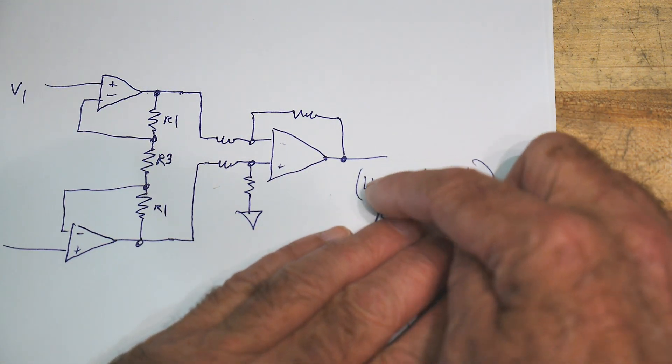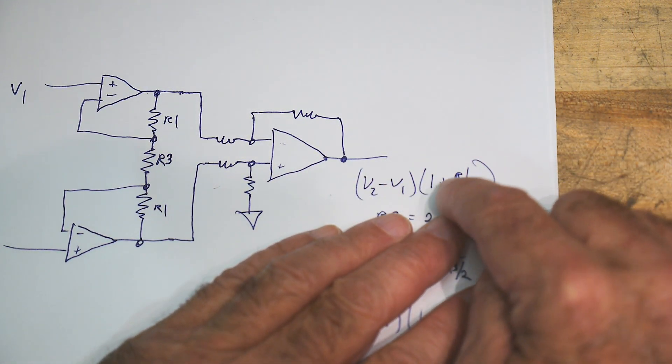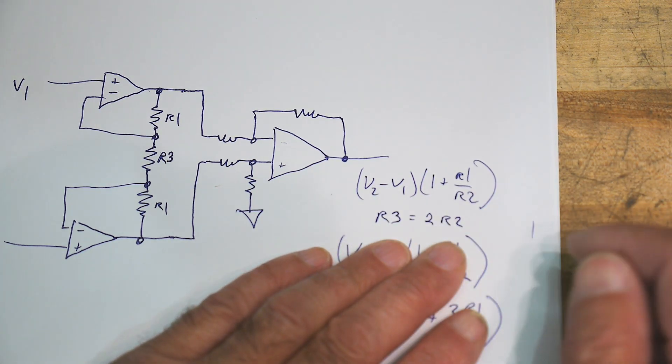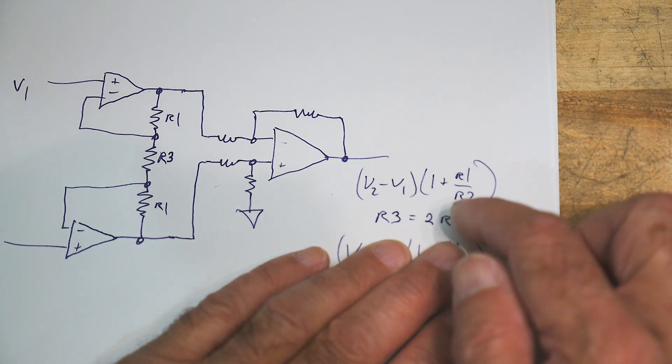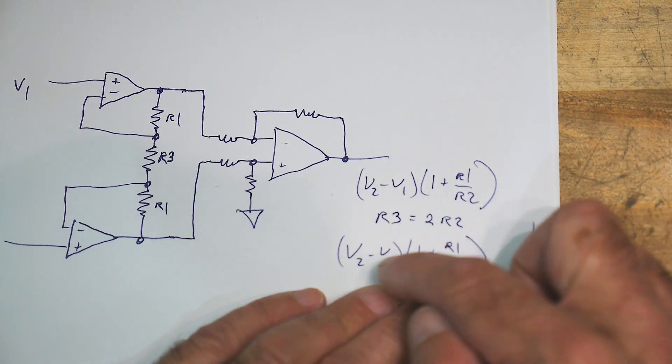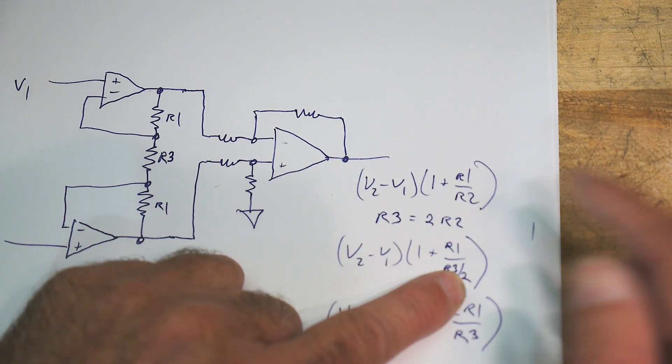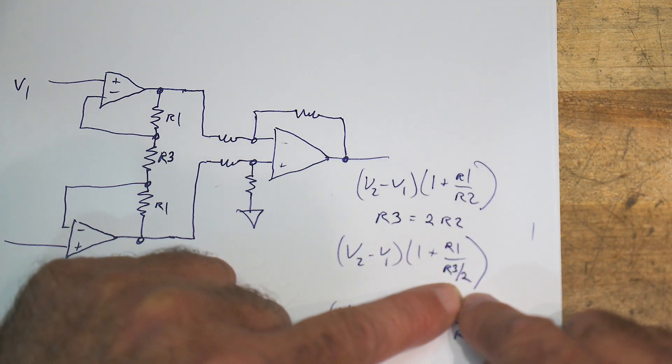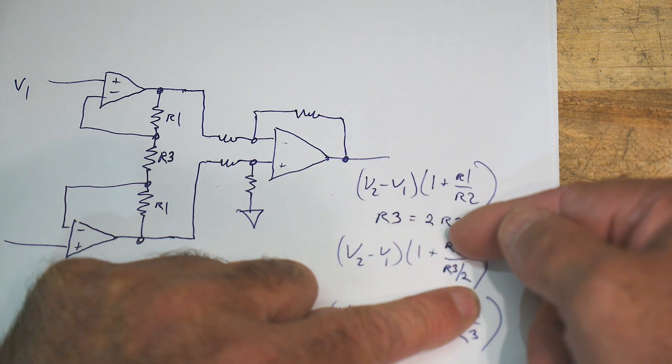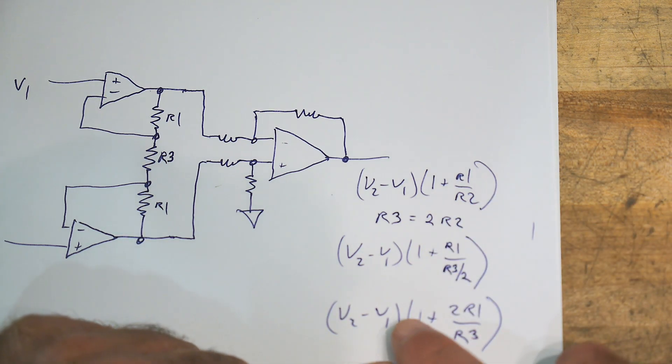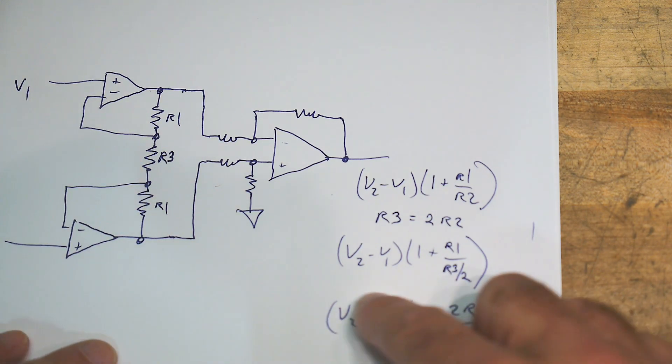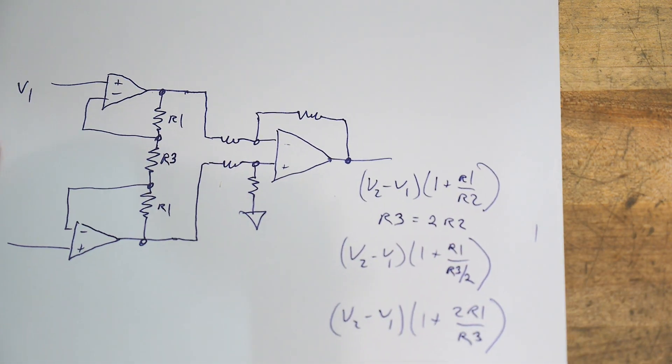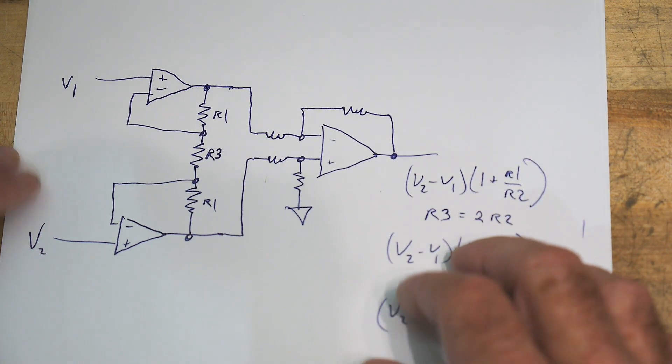If we take a look at our circuit, remember the voltage gain was 1 plus R1 over R2. But since R3 is 2 times R2, then it's just 1 plus R1 over R3 divided by 2. So R3 divided by 2 was our old R2. Just simple arithmetic - the 2 comes up and so we rewrite it as 1 plus 2R1 over R3. This is the equation for an instrumentation amplifier.